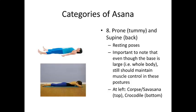Last category: resting poses. There are essentially only two — one is prone, on your tummy, and one is supine, on your back. Even though you have a very large base of support in these poses, you should still be maintaining muscle control — not just flopped out on your mat. At the end of each workout we reach Shavasana; you can choose either corpse pose on your back or crocodile on your tummy. I recommend beginners try both and see which one you can relax more deeply into. Either is fine.